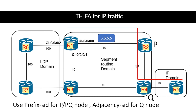From R4, the traffic is unlabeled since R5 is plain IPv4, so R4 forwards it directly to R5. The backup path goes via R2, with repair nodes R2 as P node and R4 as Q node. The FIB entry shows that R2 is acting as P node and R4 is acting as Q node.